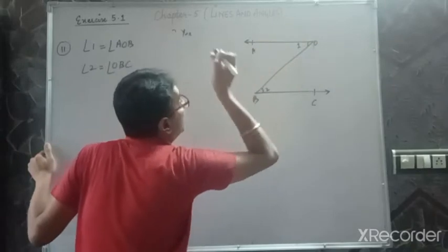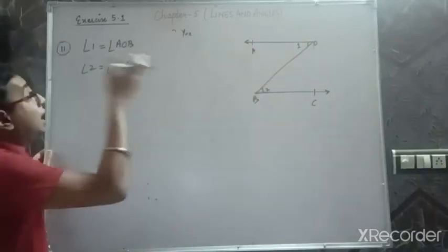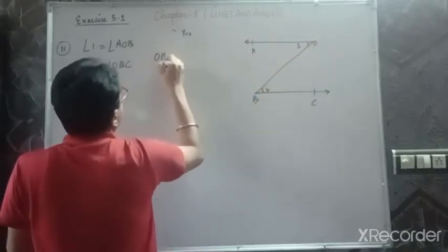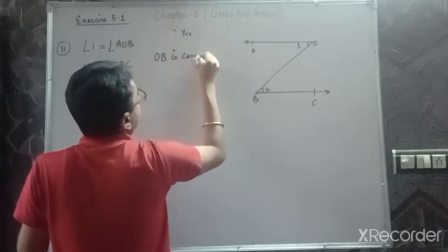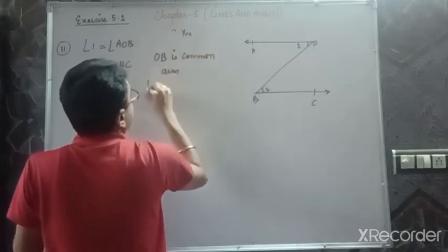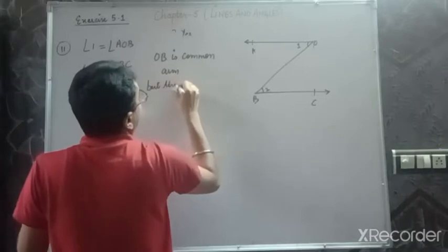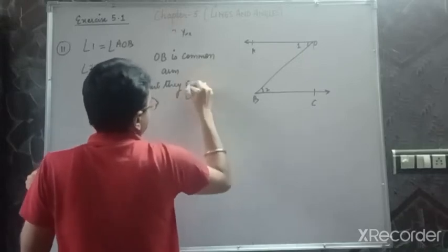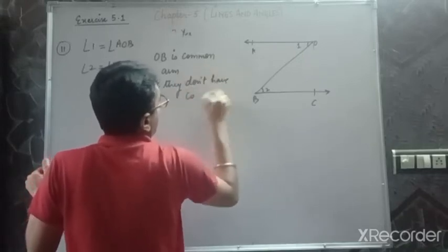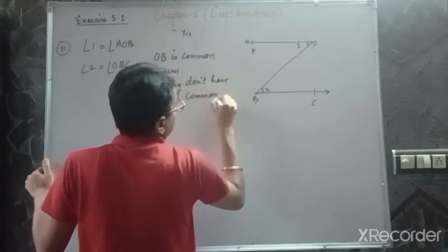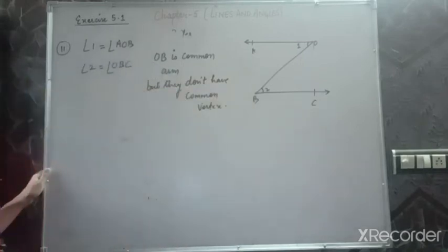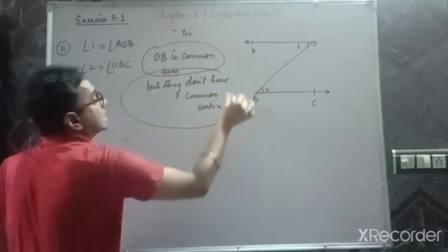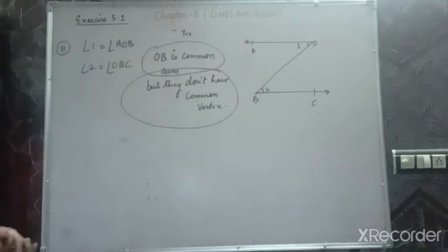They do not have a common vertex and they do not have a common arm. Wait — OB is a common arm, no doubt. But they do not have a common vertex. Hence they are not adjacent angles. The reason: OB is a common arm, but they do not have a common vertex. Hence they are not adjacent to each other.